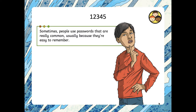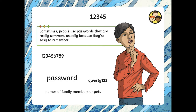Sometimes people use passwords that are really common, because they're easy to remember. Like 12345. Or 123456789. Or QWERTY123, because it's the first things on the keyboard. Or the password is 'password'. Or the names of your family members or pets — like mum, or dad, or Rover, or whatever the name of your dog is. Or your birthday. Or ABCDEFG.